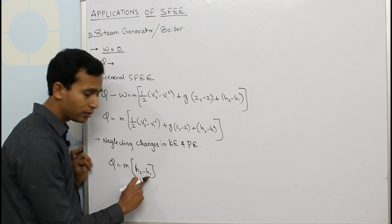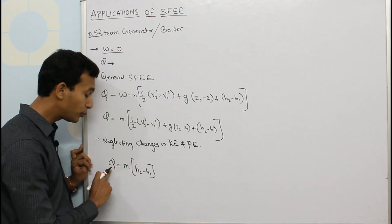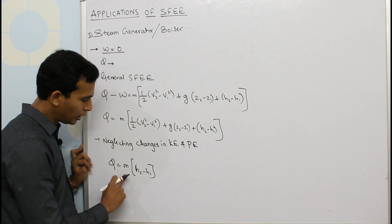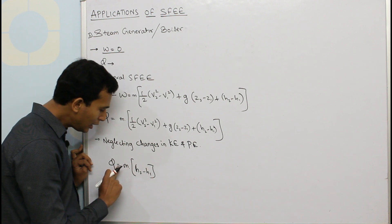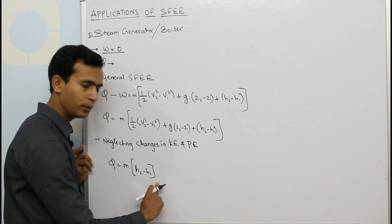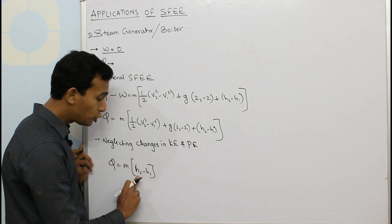As we all know, as per sign conventions, Q is positive when it is supplied. So here this term is positive because we are supplying heat here. If you are having an equal sign, means if this term is positive, this has to be positive. In order to have this term positive, H₂ must be greater than H₁.